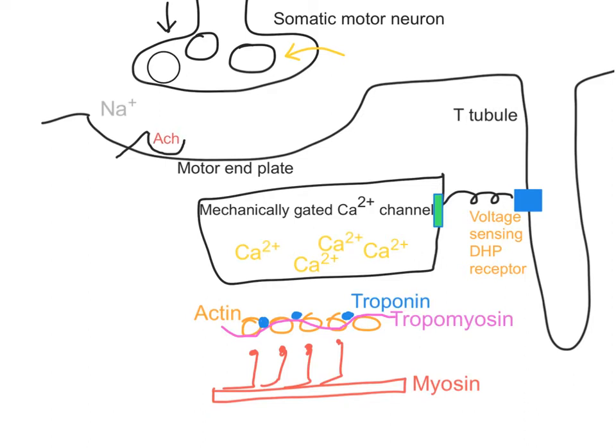This then triggers exocytosis and the acetylcholine would have been released from the presynaptic cell — the somatic motor neuron. The ACh will go across the synaptic cleft and bind to cholinergic, in particular nicotinic cholinergic receptors, at the motor end plate. The binding of ACh with these cholinergic nicotinic receptors opens up chemically-gated sodium channels. Sodium is then going to diffuse into the cell.